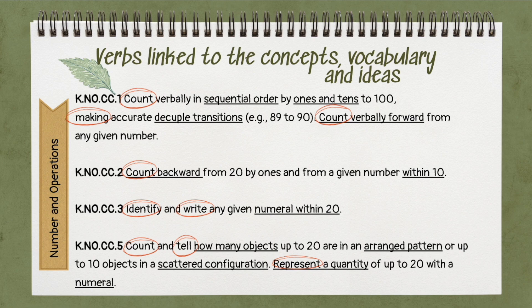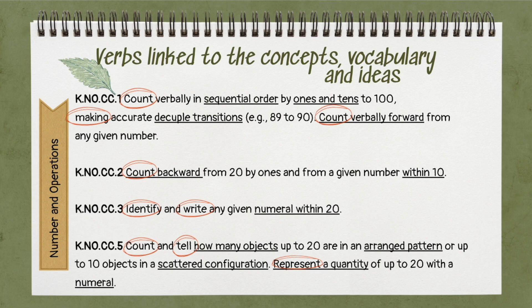When unpacking standards, verbs are crucial as they indicate the actions or skills learners are expected to demonstrate. Some essential verb types we might come across include cognitive verbs — encompassing knowing, comprehending, applying, analyzing, evaluating, and creating. There might also be action verbs such as communicating and performing, as well as verbs like demonstrating, using, and developing. Within each of these subcategories, there are other verbs that mean similar things. For example, knowing could include: understand, identify, recall, define, describe, label, list, memorize, name, recognize, state.